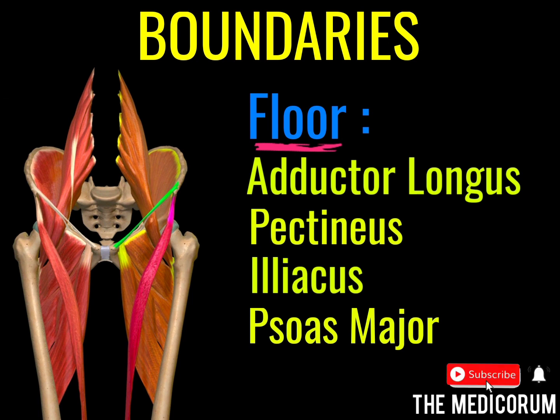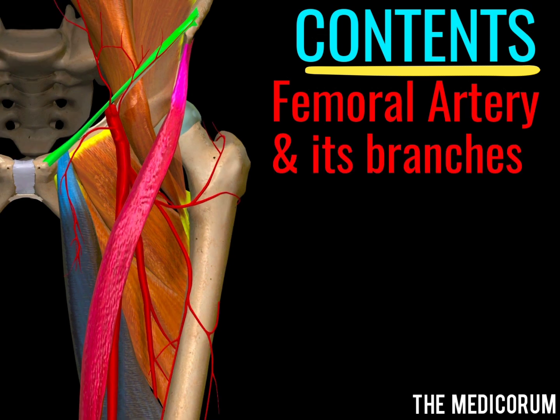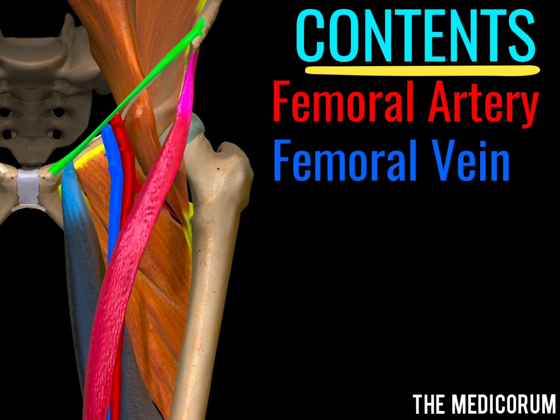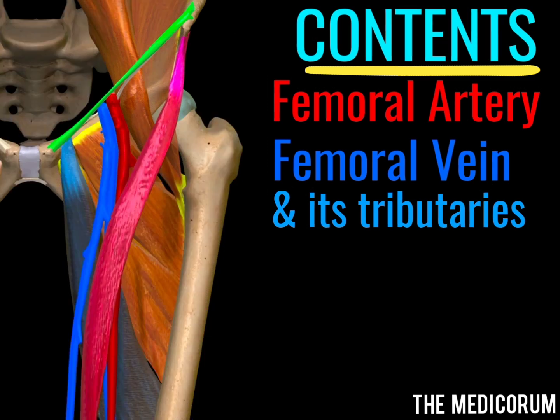Coming on to the contents of the femoral triangle: the first is the femoral artery and its branches. The femoral artery in the femoral triangle gives off six branches, out of which three are superficial and three are deep. Next, we have the femoral vein along with its tributaries. The femoral vein in the femoral triangle also receives the great saphenous vein.